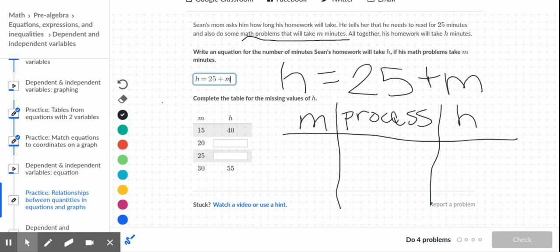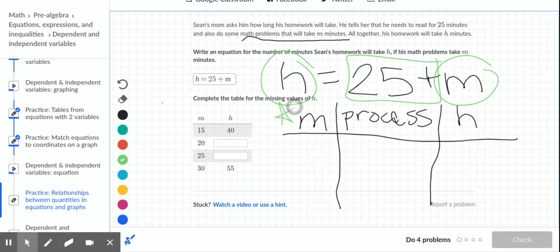So our process here, we can see up in our equation, our H is equal to our M plus 25. So if we look at our table, we have our M here and we have our H here. And to get from M to H, we have to add 25.